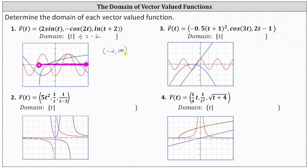For number two, x of t equals five t squared is graphed in blue — the domain is all reals. y of t equals one divided by t is graphed in red; notice the vertical asymptote at t equals zero, so t equals zero is not in the domain. And z of t equals one divided by the quantity t minus three is graphed in black; notice t equals three is not in the domain.